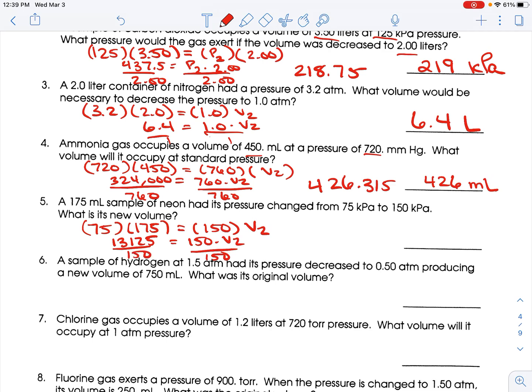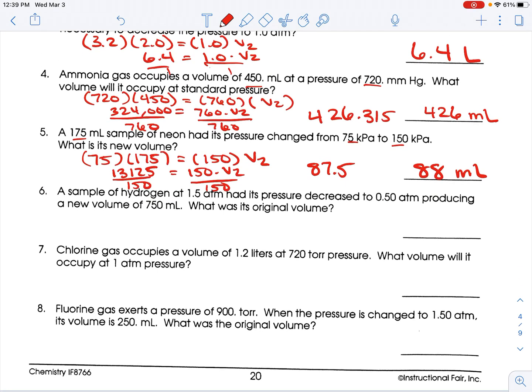Hold on. 13,125 divided by 150 is 87.5. So, if you were rounding to sig figs, three sig figs, two, two, that would be 88 milliliters. However, like I've been saying, if your teacher is nice enough to not make you round to sig figs, you don't have to, and you can leave it at 87.5.